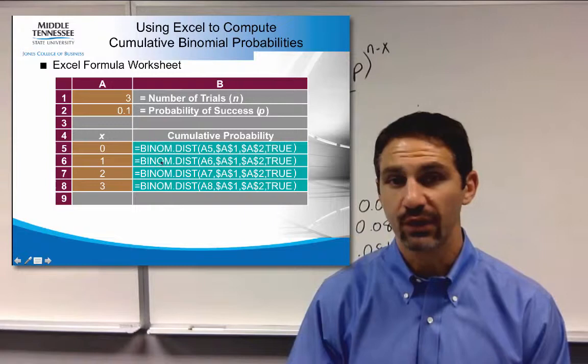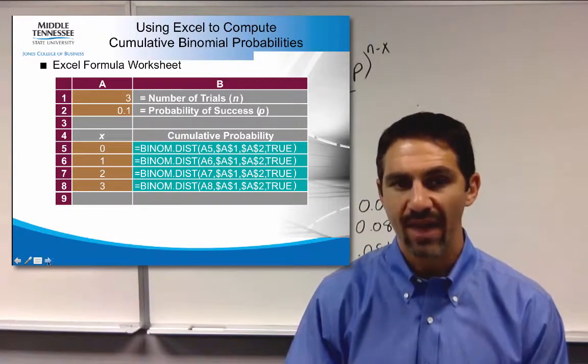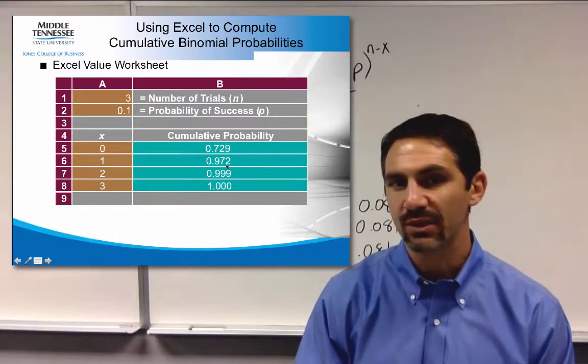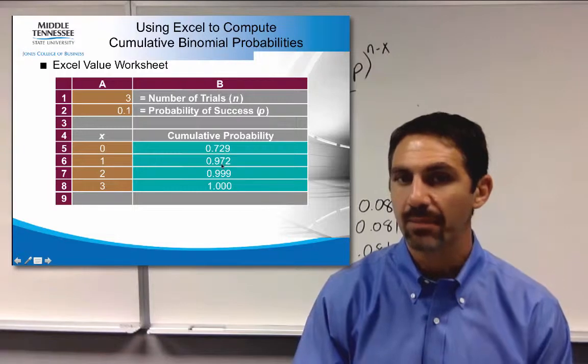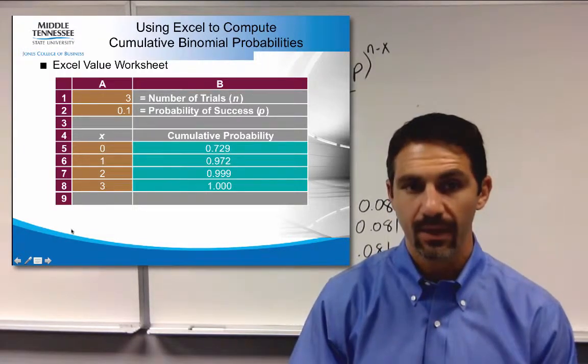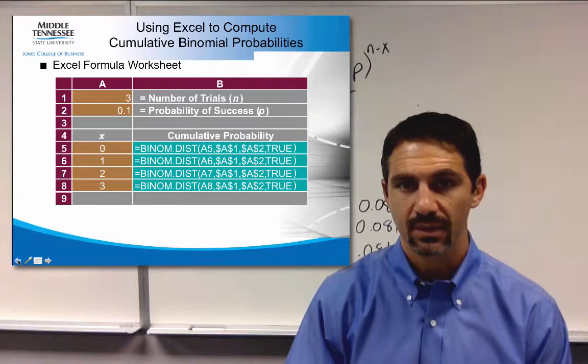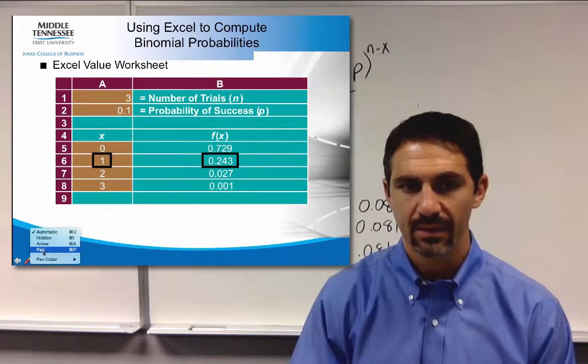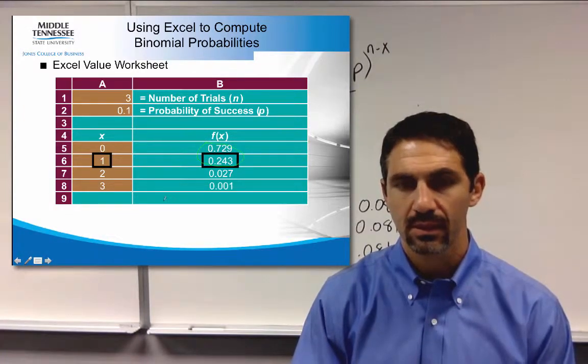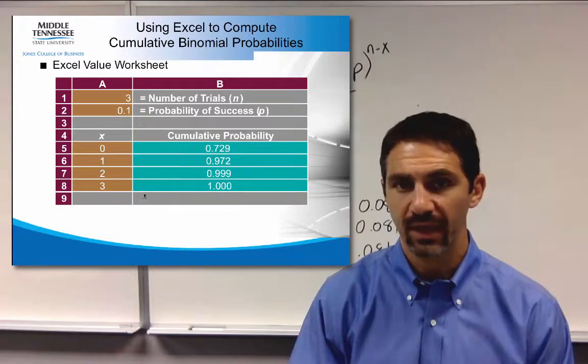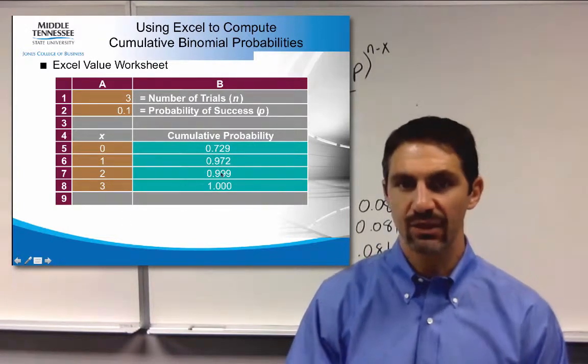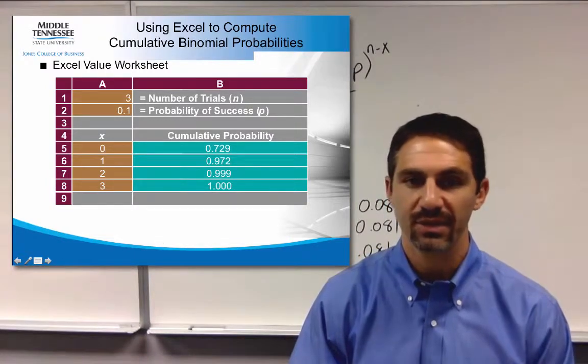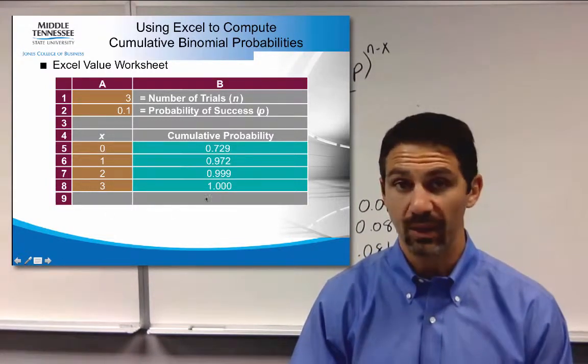You can also do it for cumulative, which is where you set this to true. And all that means is it takes the first one plus the second one. So this 97.2 is actually 0.729 plus 243, which, let's go back here. These two numbers combined is the cumulative of that would be that 0.972. And then you add the third one into that, it's 999, and then the last one making it 100%. Your last one will always be 100%.